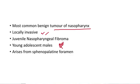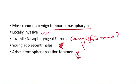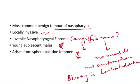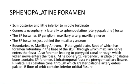It arises from the sphenopalatine foramen — another MCQ point. Nasopharyngeal angiofibroma has angiomatous tissue (blood vessels) and fibrous tissue, but it has no muscle, so there is no contraction. This is the reason biopsy is contraindicated: if you take a biopsy by mistake in the clinic, it will bleed profusely because there is no muscle to contract, and the patient can land in serious trouble.